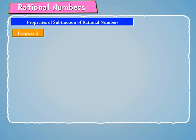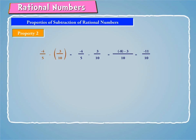Property 2: Let us consider the following. (−4/5) minus (3/10) equals (−8 minus 3) by 10, which equals −11/10. And (3/10) minus (−4/5) equals (3/10) plus (4/5), which equals (3 plus 8) by 10, which equals 11/10.